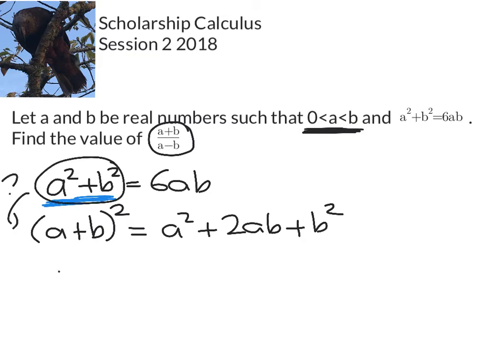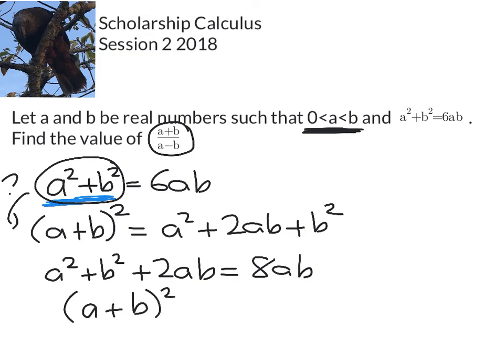So maybe I can do something to force this into this pattern. I can do that really easily. I just add 2ab to each side. So we get a² plus b² plus 2ab is 8ab, and that gives me (a + b)² equals 8ab.